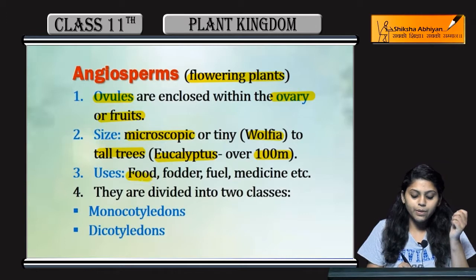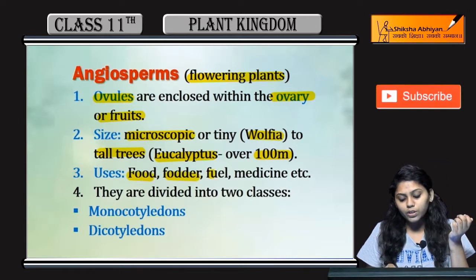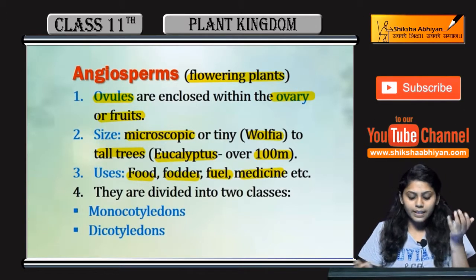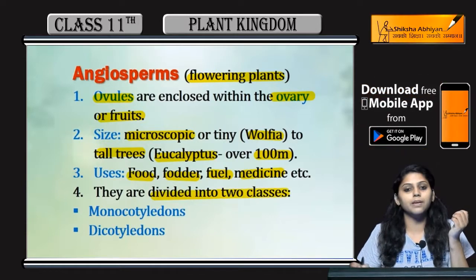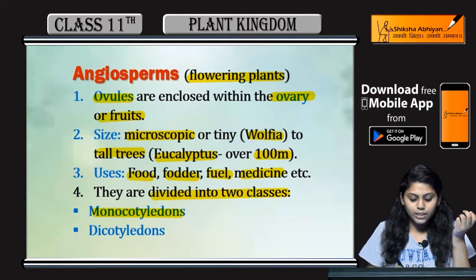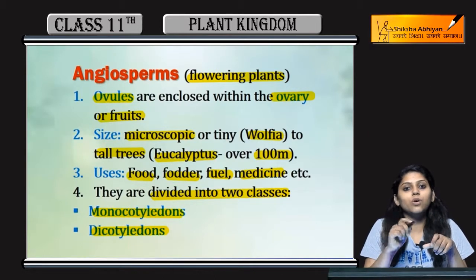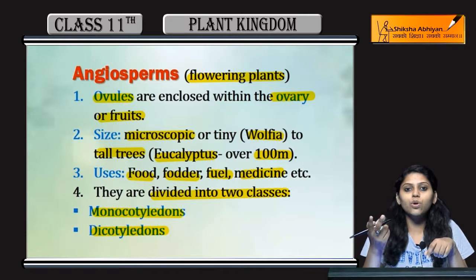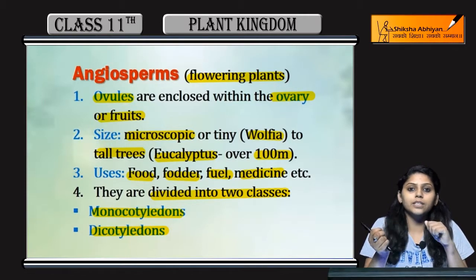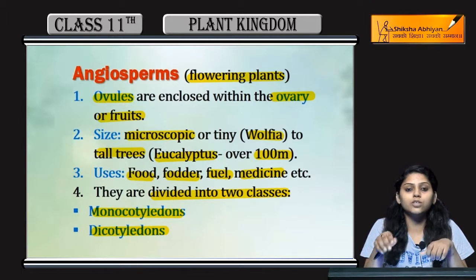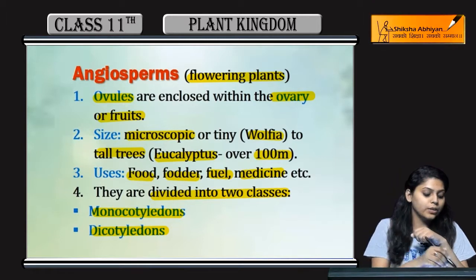They may be used as food, fodder, fuel, and medicine. They are divided into two subclasses: monocotyledons and dicotyledons. Mono means one cotyledon will be present; if there are two cotyledons, they will be known as dicotyledons. We will study monocotyledons and dicotyledons in detail in further chapters.